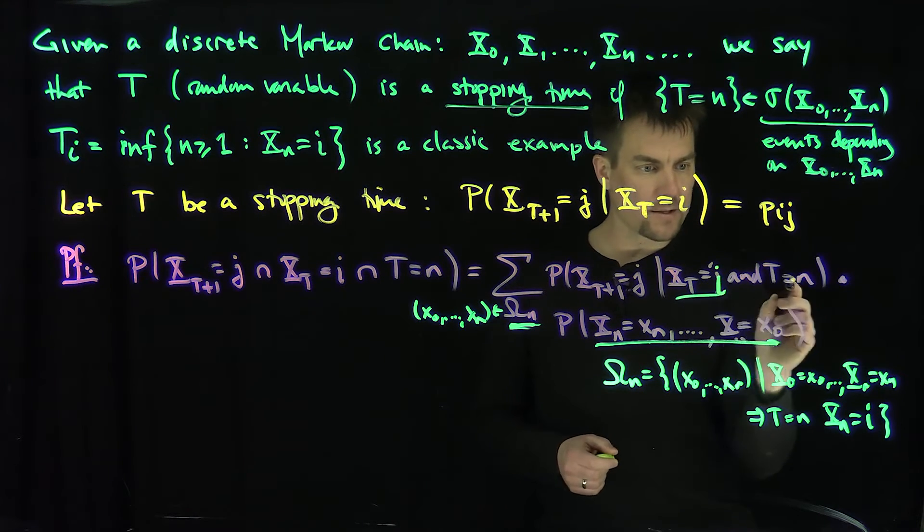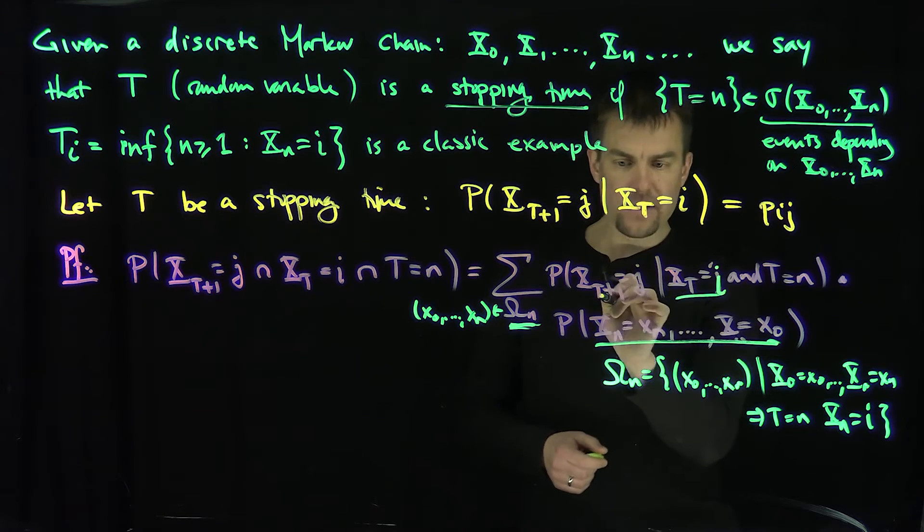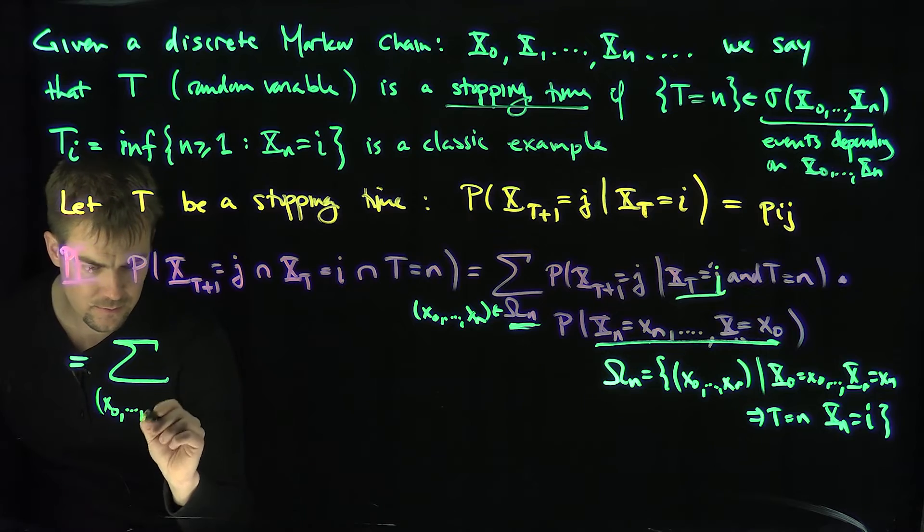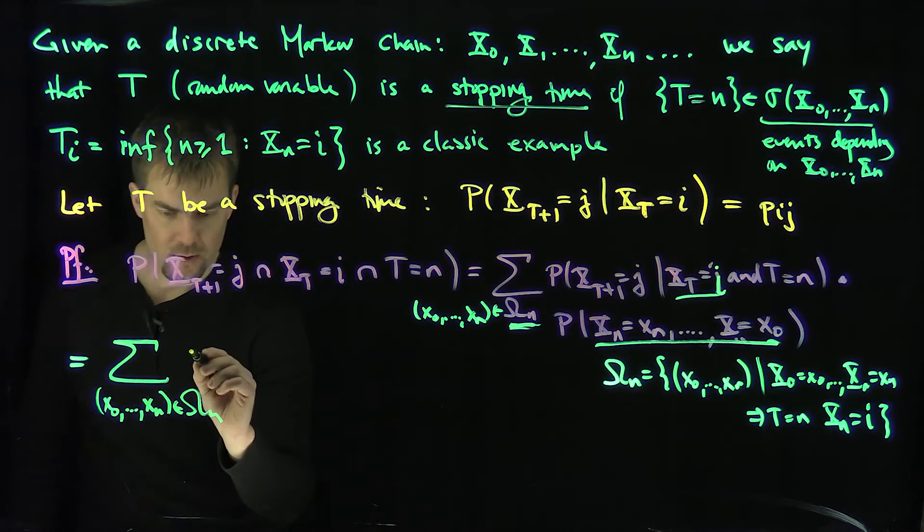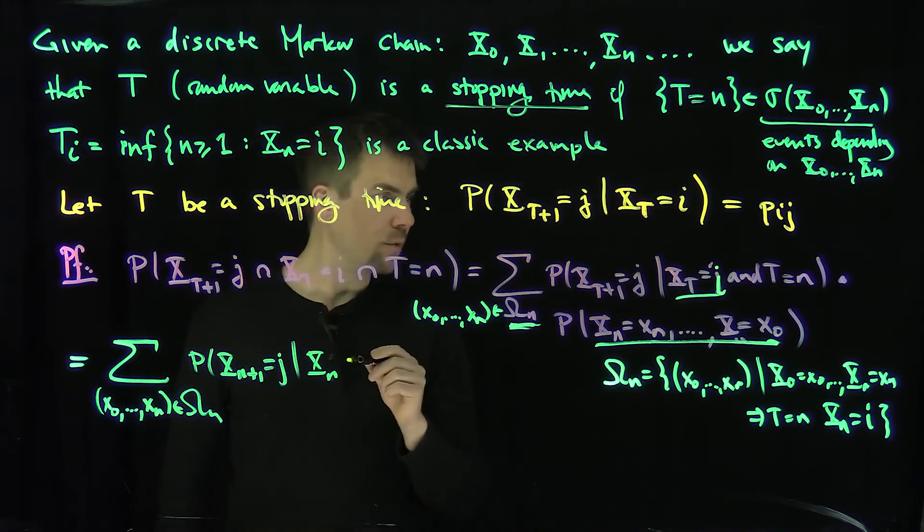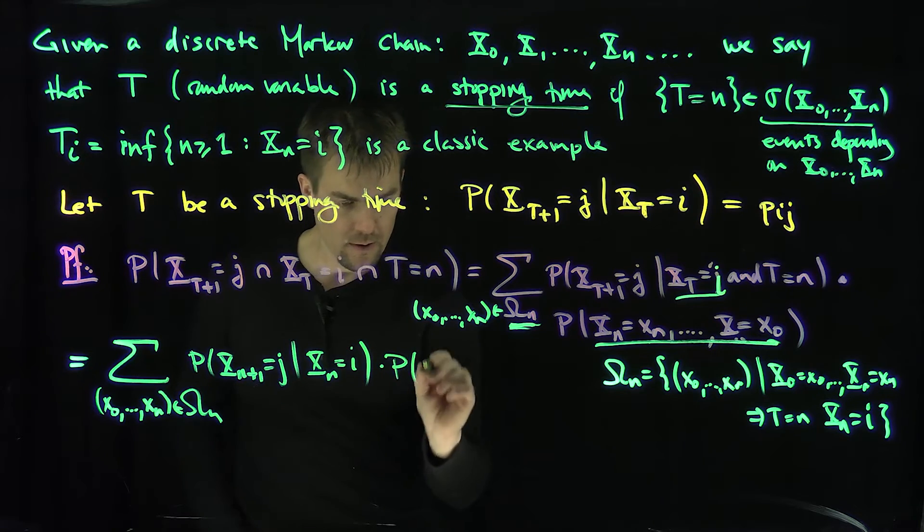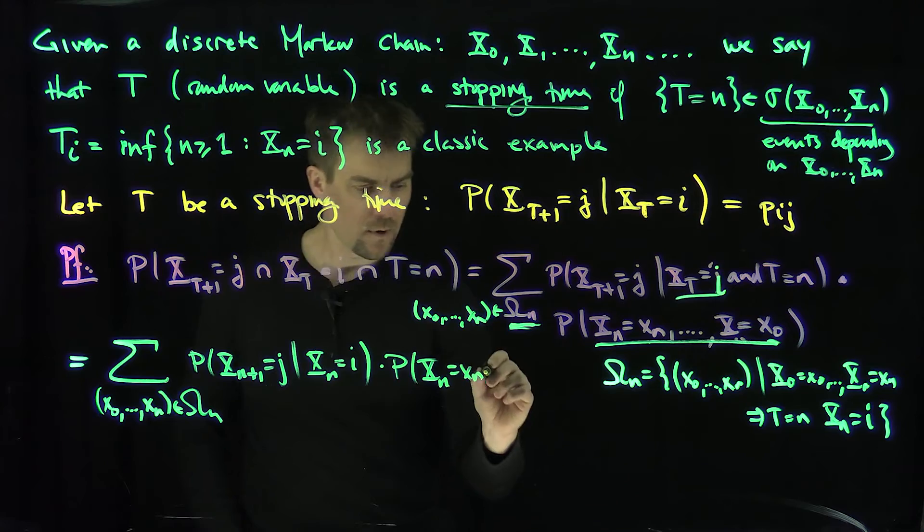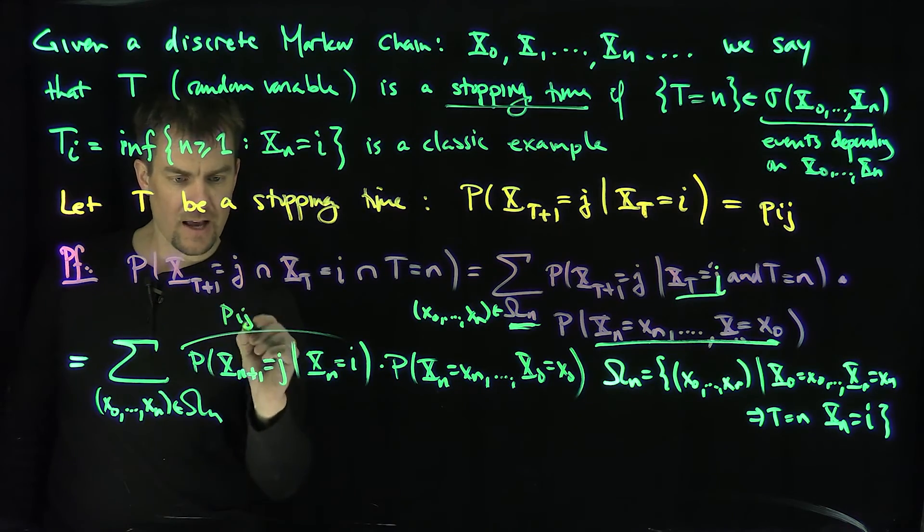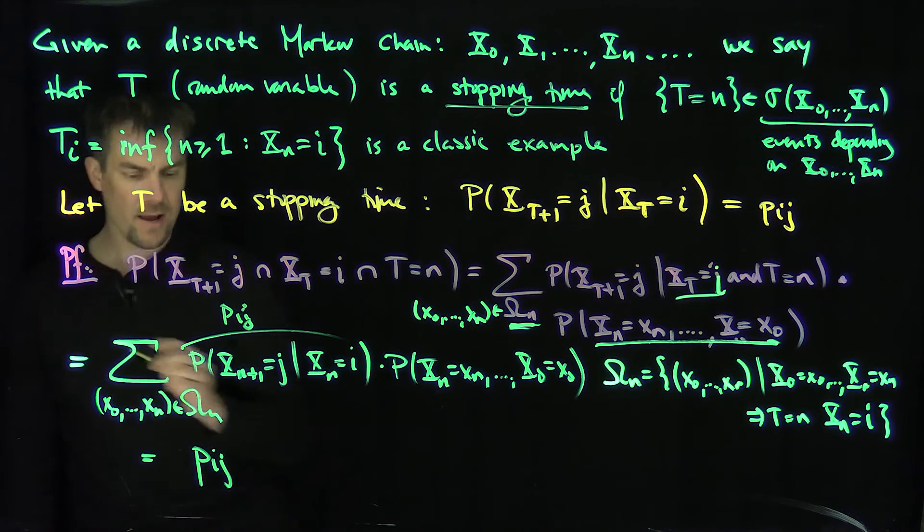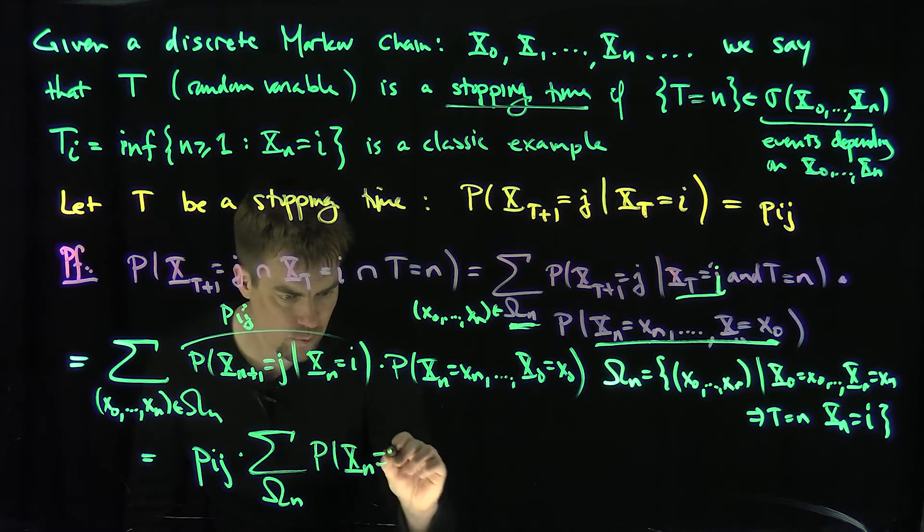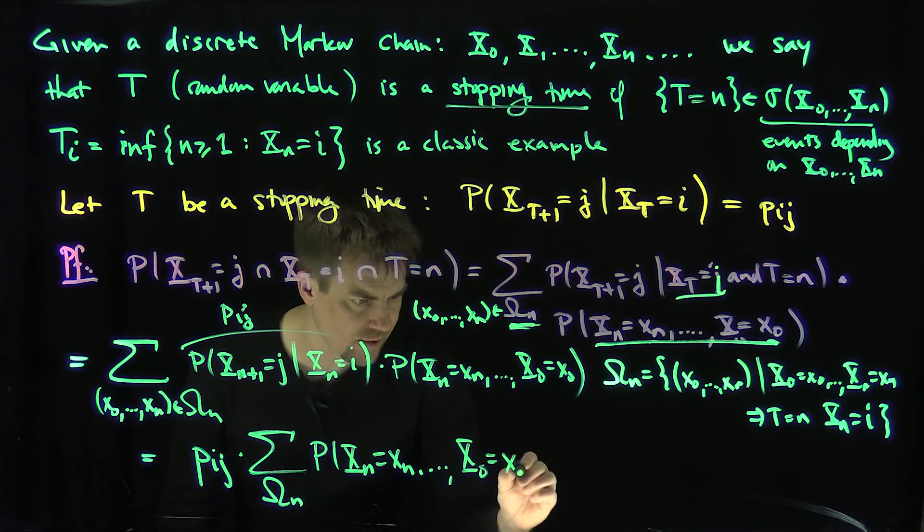So we're implicitly summing over this thing. Now what can I do? Now if t is equal to n, this becomes what? If t is equal to n, this becomes x_n and this becomes x_n plus 1. So what's going to happen over here is that this sum is going to revert to the sum over all these vectors on this omega_n set of the probability that x_n plus 1 is equal to j, given that x_n is equal to i, times these probabilities over here. Probability x_n is equal to x_n, all the way down to x_0 is equal to x_0.